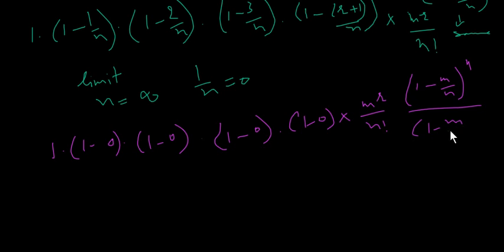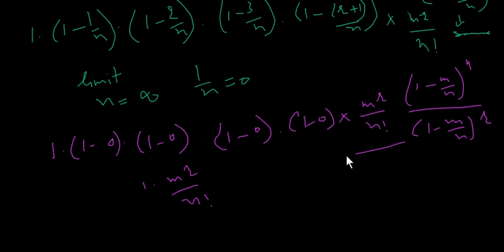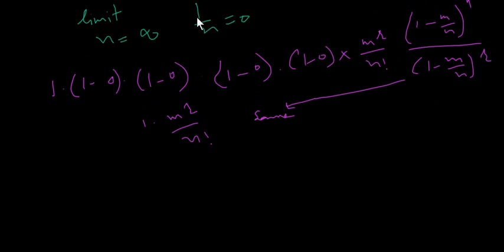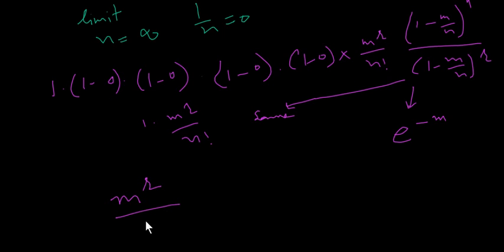And we have 1 minus m divided by n to the power minus r, which goes to 1. So we are left with m to the power r divided by r factorial, and the limit of 1 minus m divided by n to the power n equals e to the minus m. So joining these: m to the power r divided by r factorial times e to the minus m.